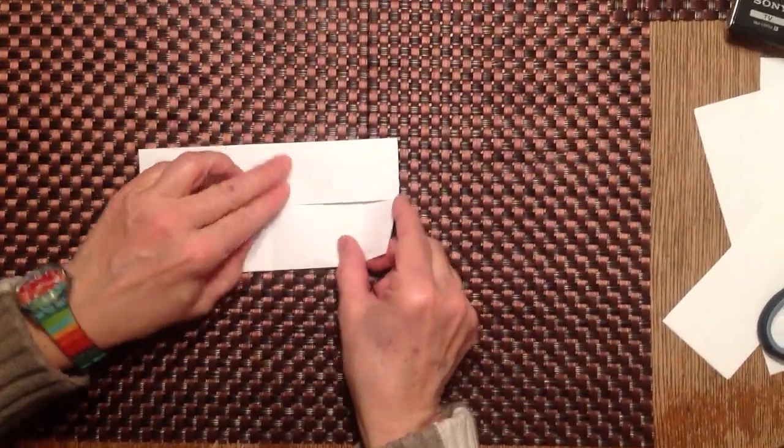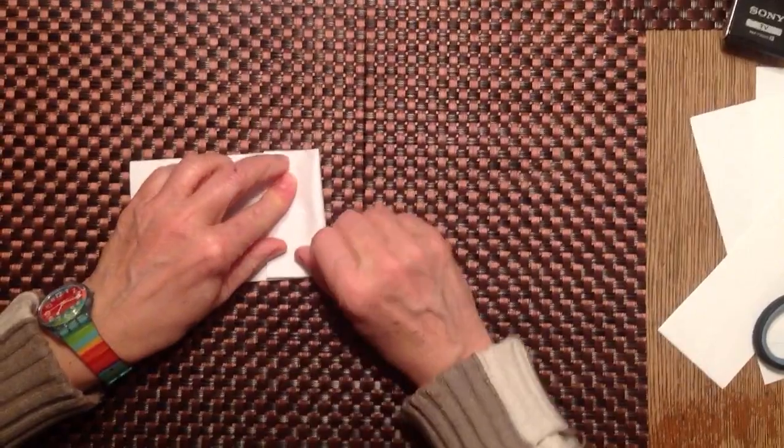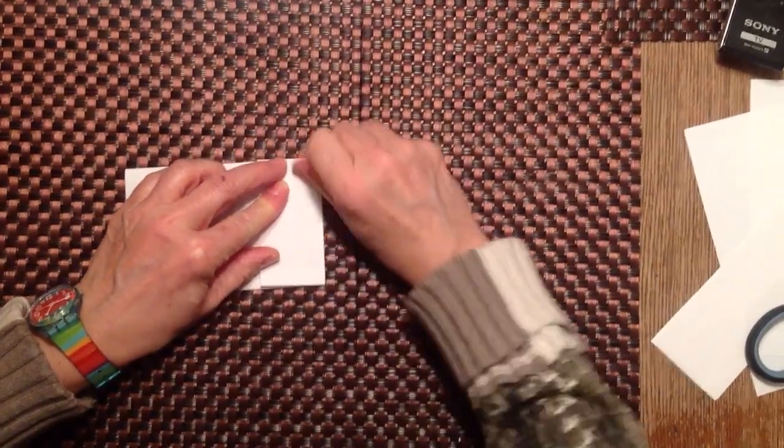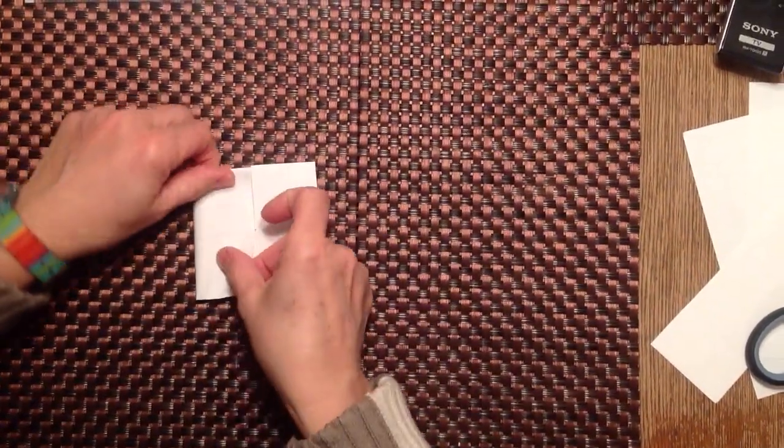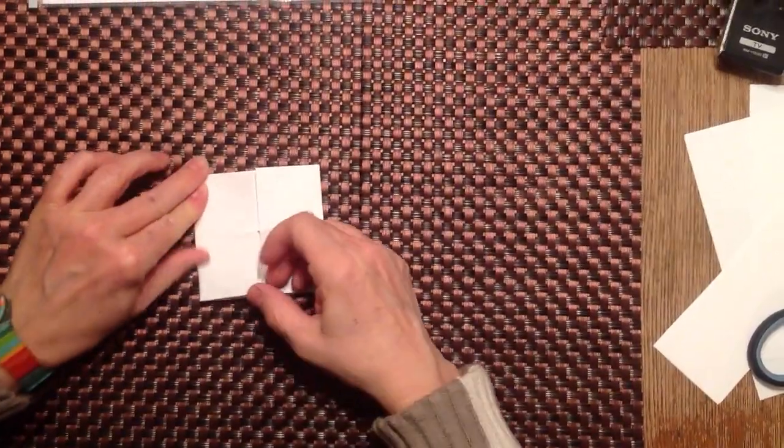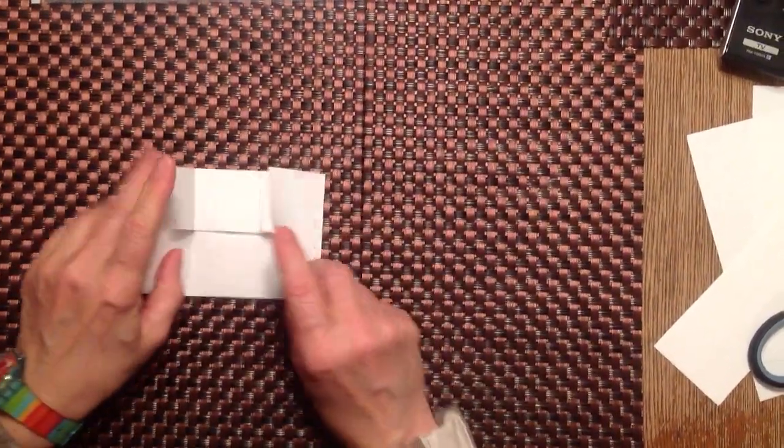Now we're going to fold the outside edges towards the center. Make a crease. Make a crease. Open it up.